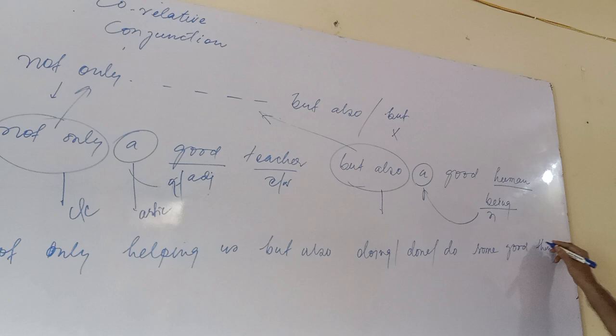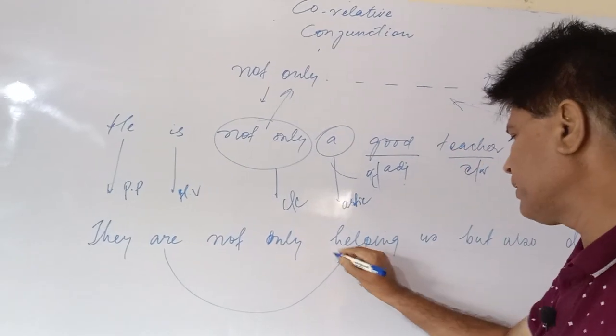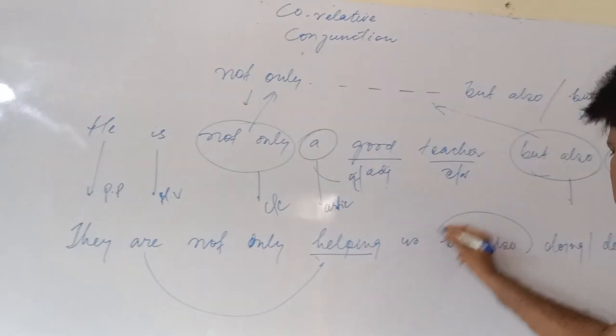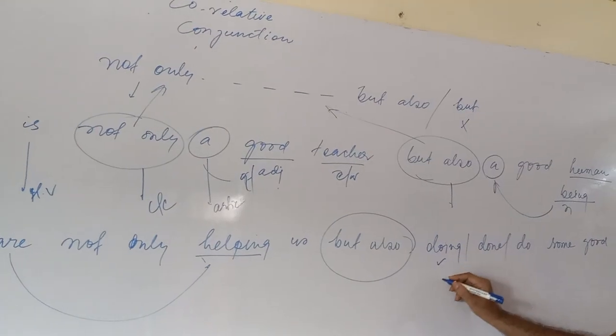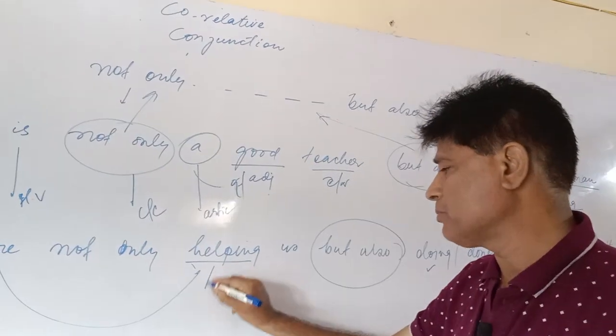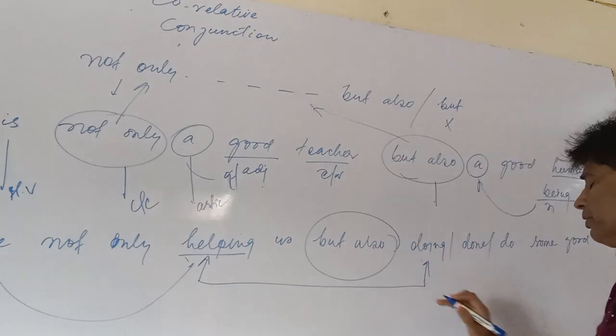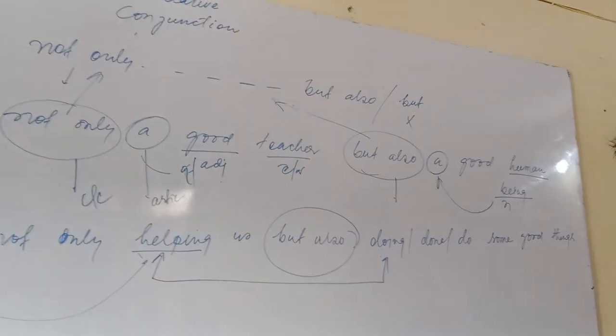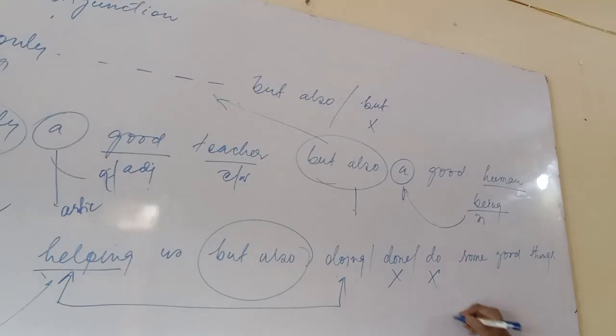Remember that once you are using 'are helping', then in the same sentence in the second clause you have to use -ing form: doing. Like 'helping', you are using 'helping' in this sentence, so you have to use in the second clause 'doing', not 'done', not 'do'. Clear?